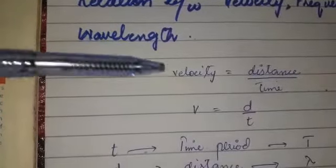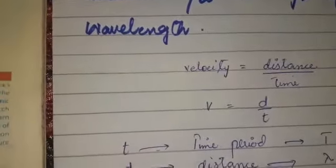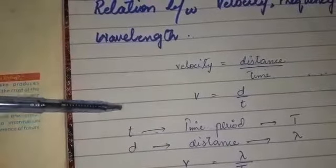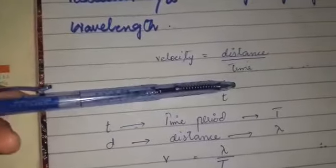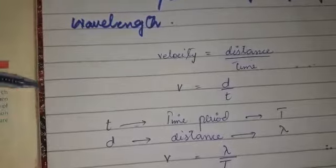Now, for a wave, we have a time period. The time period is equal to T, and the distance covered by the wave is the wavelength.